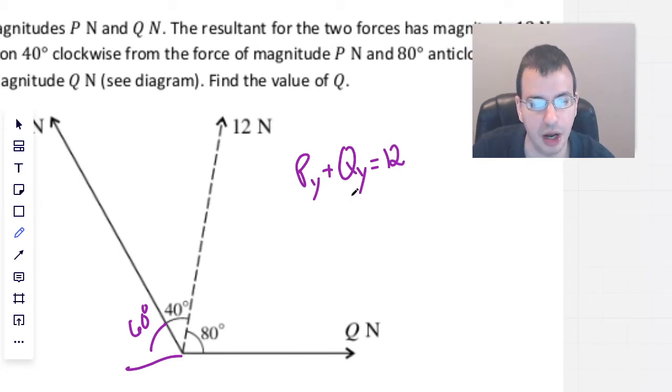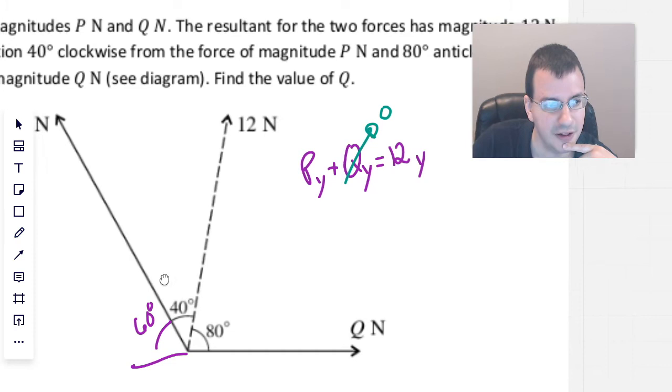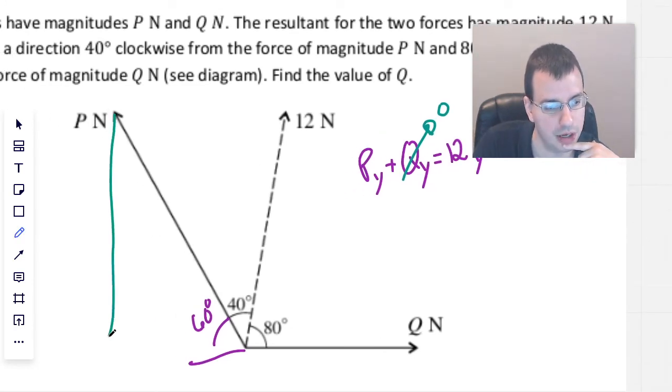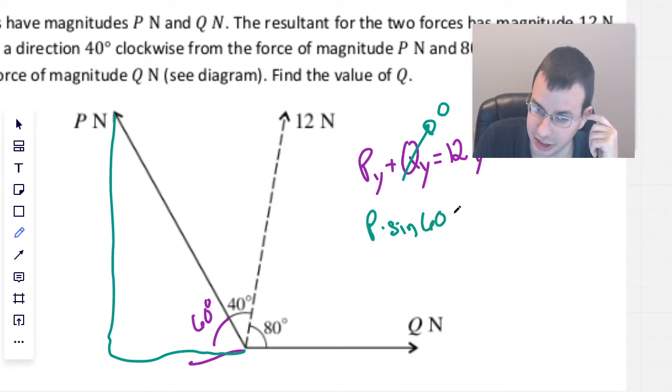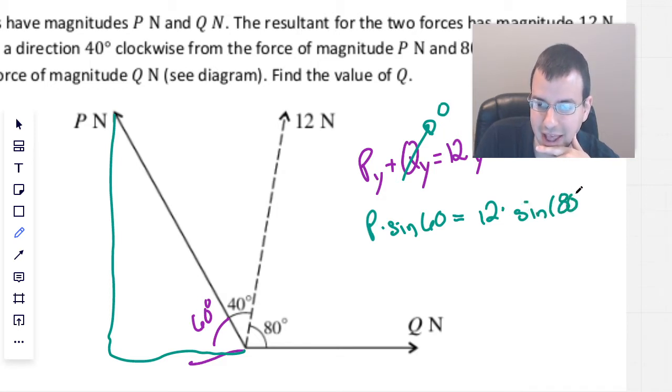So the Y components of P and the Y components of Q will equal the Y component of 12. Rephrasing that, we know that there is no Y component to Q because it's horizontal, and finding this portion right here, the Y component of P...